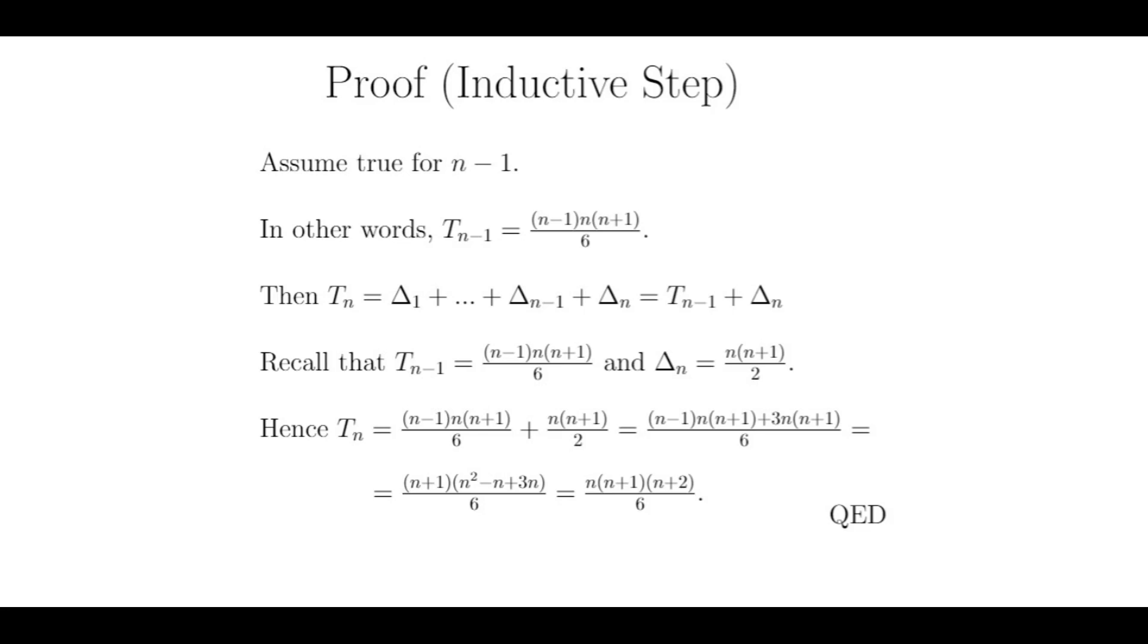Now we will examine t sub n. Remember that the nth tetrahedral number is just all of the triangular numbers from 1 to n summed together. Again, I am using the symbol delta to represent the nth triangular number because the Greek letter delta looks like a triangle. So we have t sub n is equal to delta 1 plus delta 2, etc.